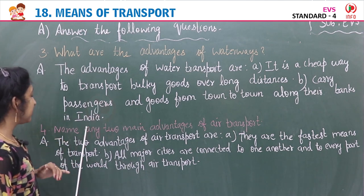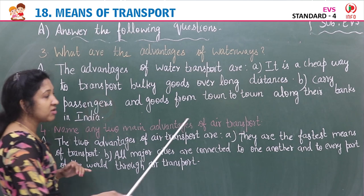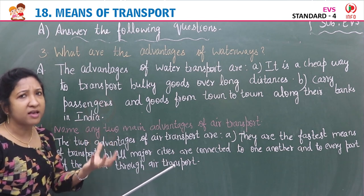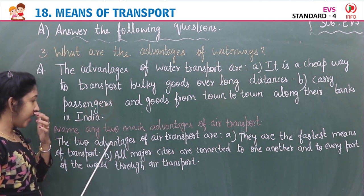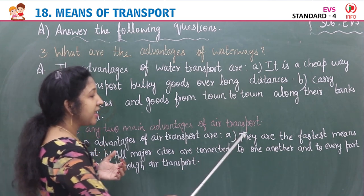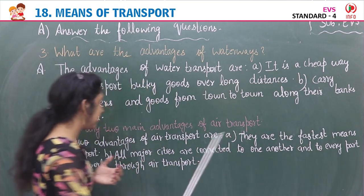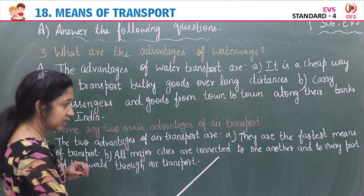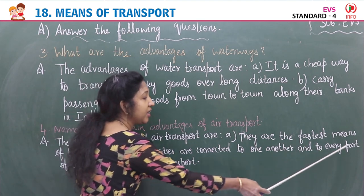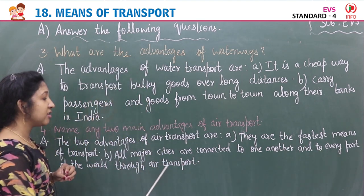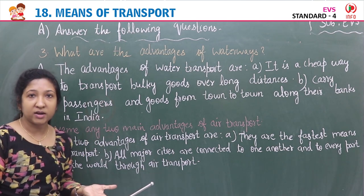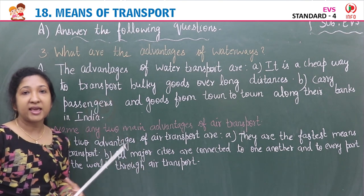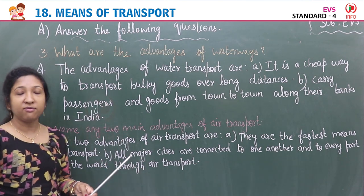Question four: Name any two main advantages of air transport. The two advantages of air transport are: (a) they are the fastest means of transport, and (b) all major cities are connected to one another and to every part of the world through air transport.